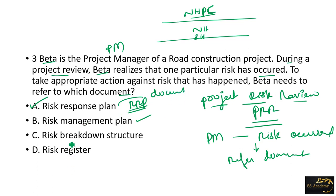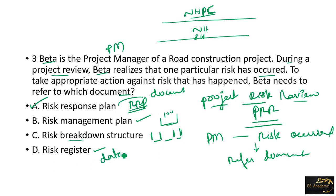There is also a risk breakdown structure. We have to clearly maintain a risk register so that when an auditor comes, we can explain the risk mitigation plan clearly to the legal auditing person.